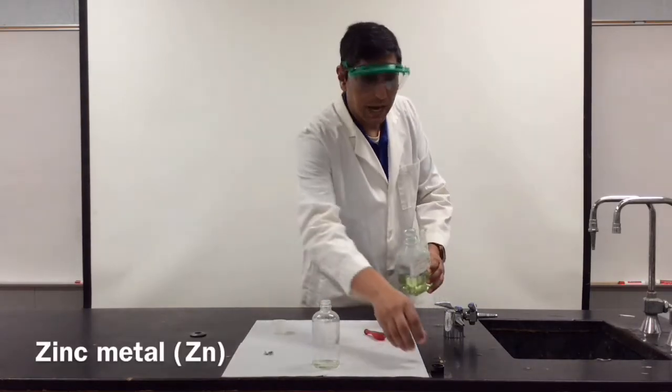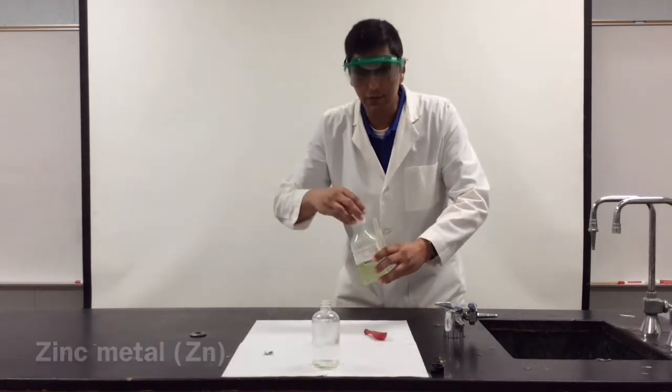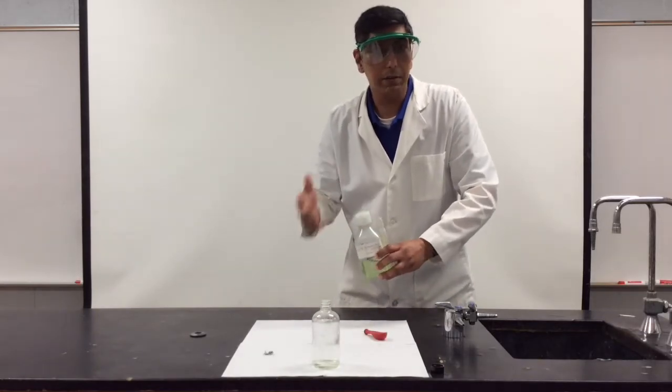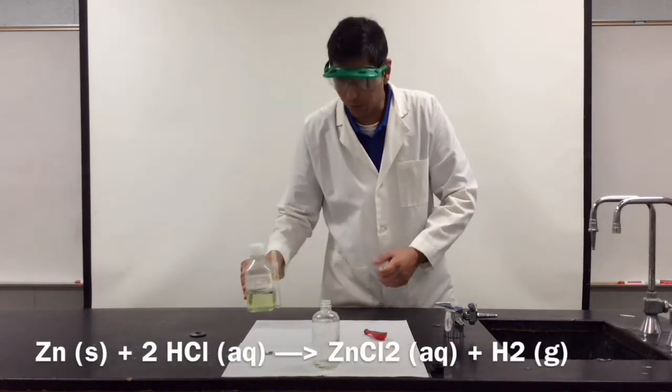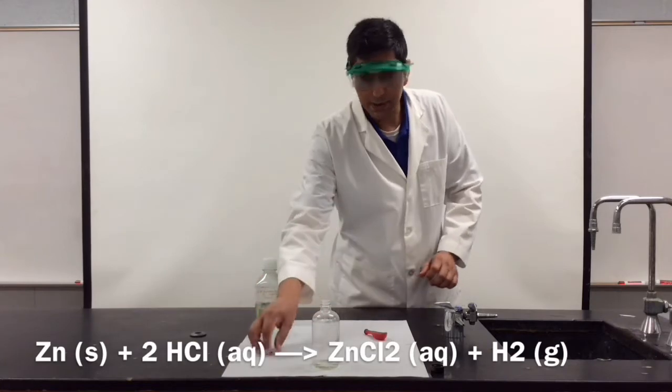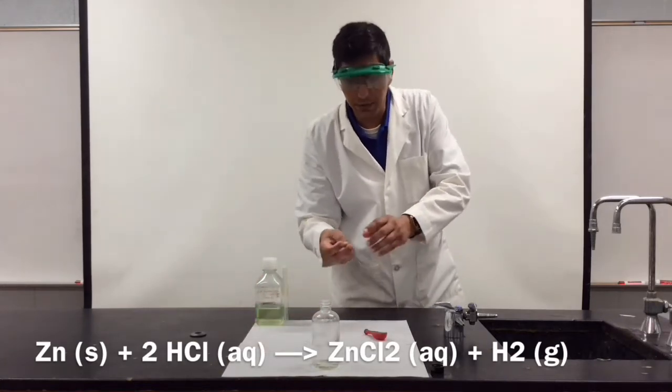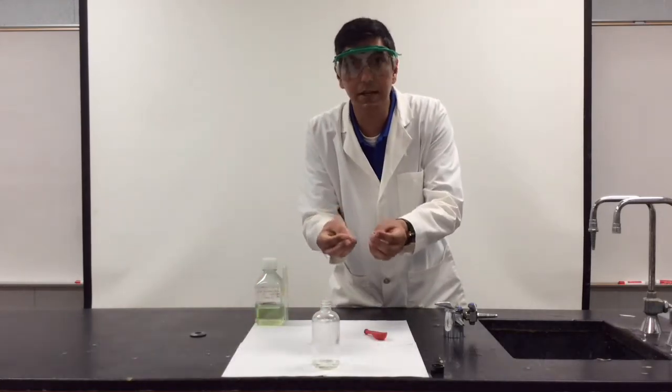Now zinc metal reacts with hydrochloric acid to produce hydrogen gas and zinc chloride. So we're going to see what happens. Now the hydrogen gas as we know can be collected. So I'm going to drop the zinc metal.